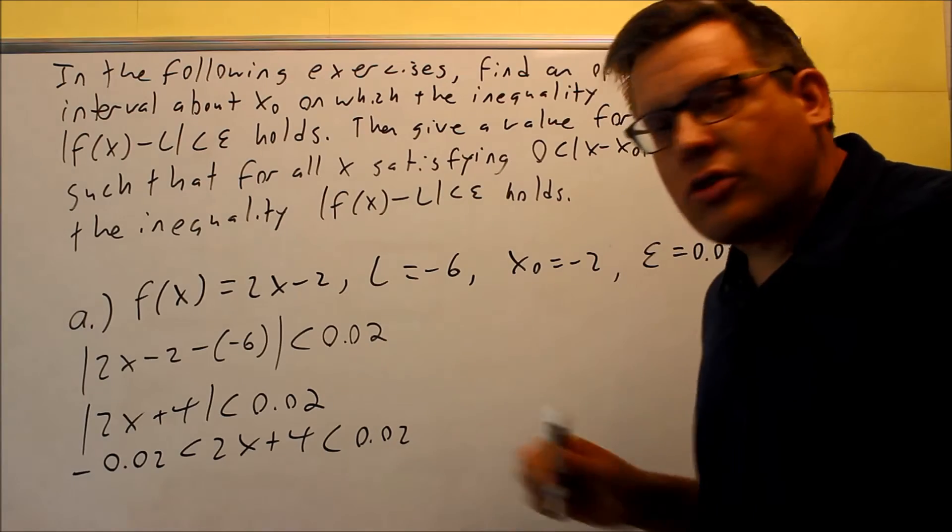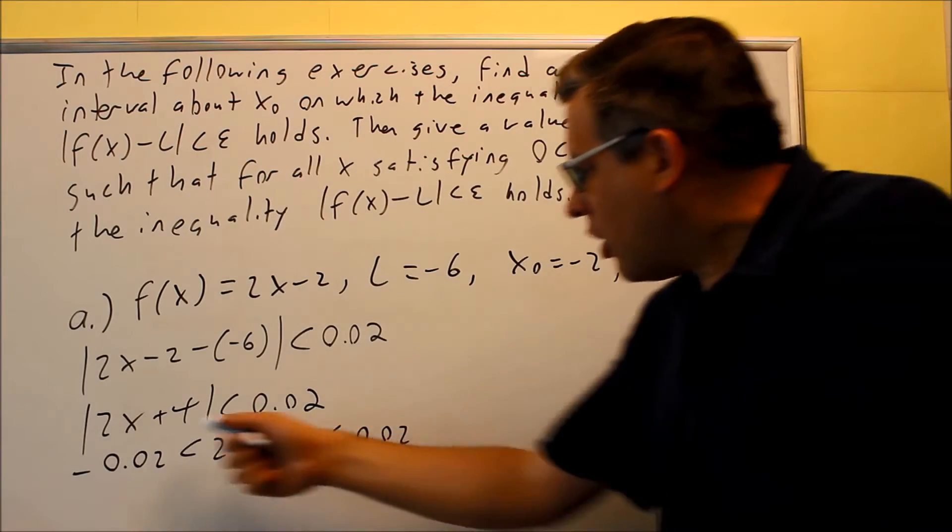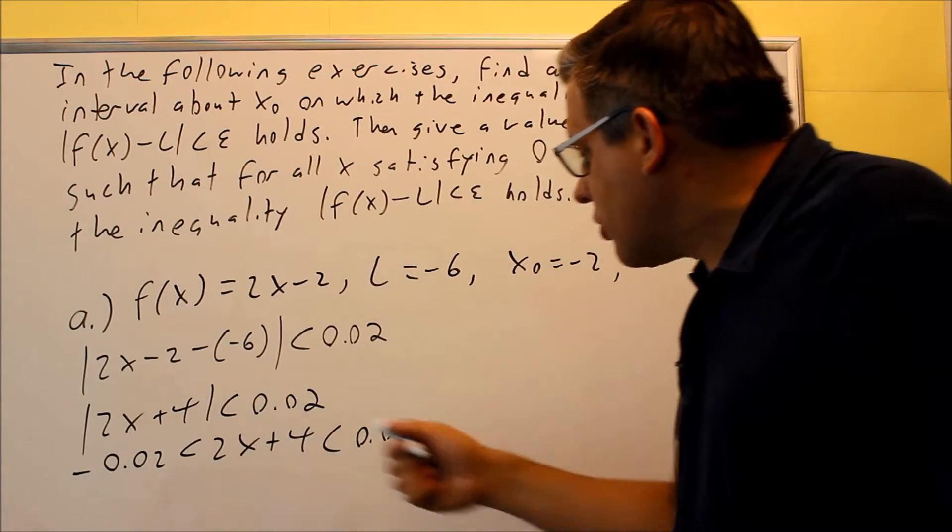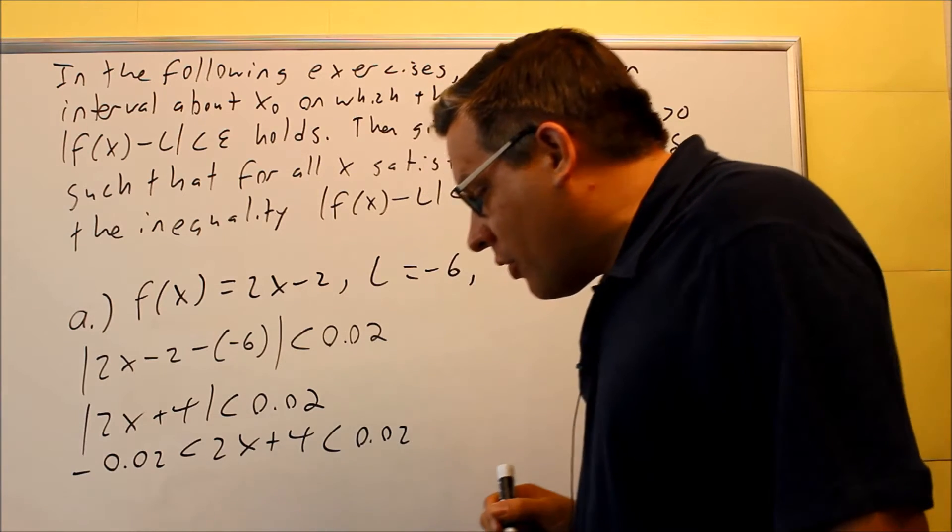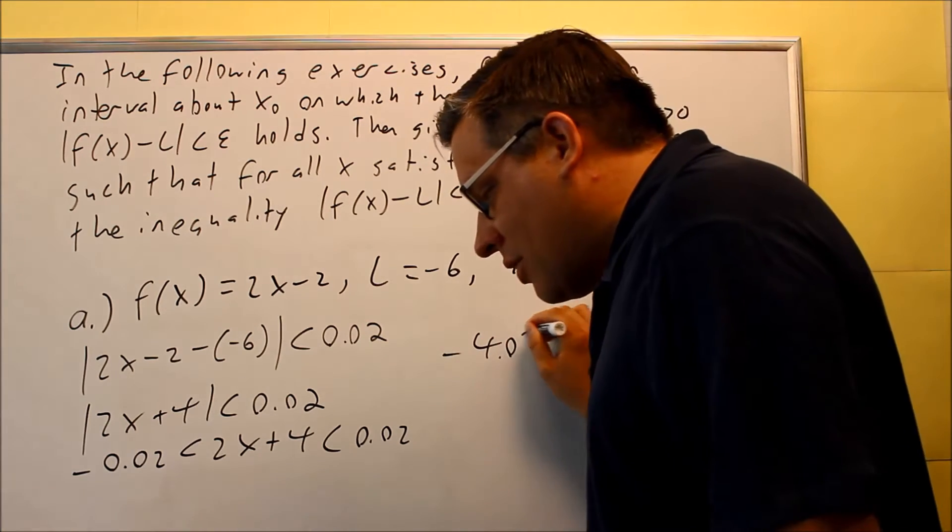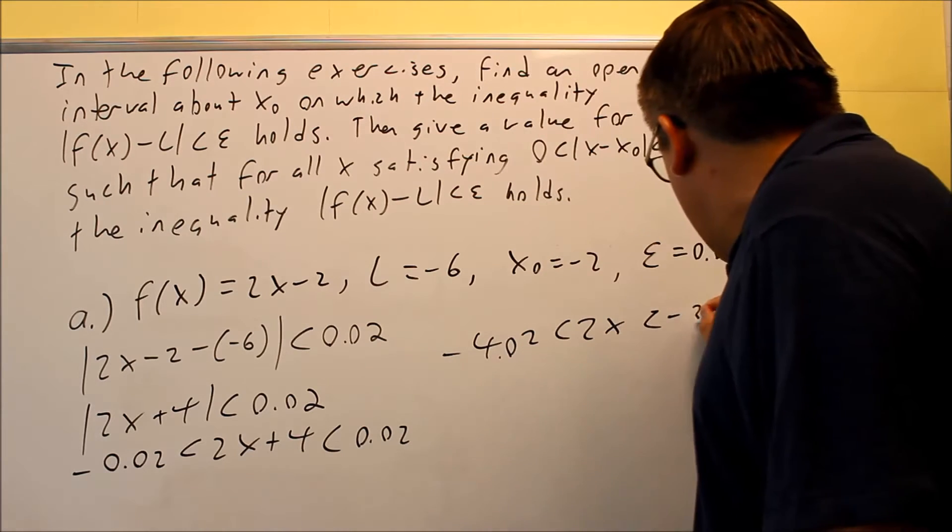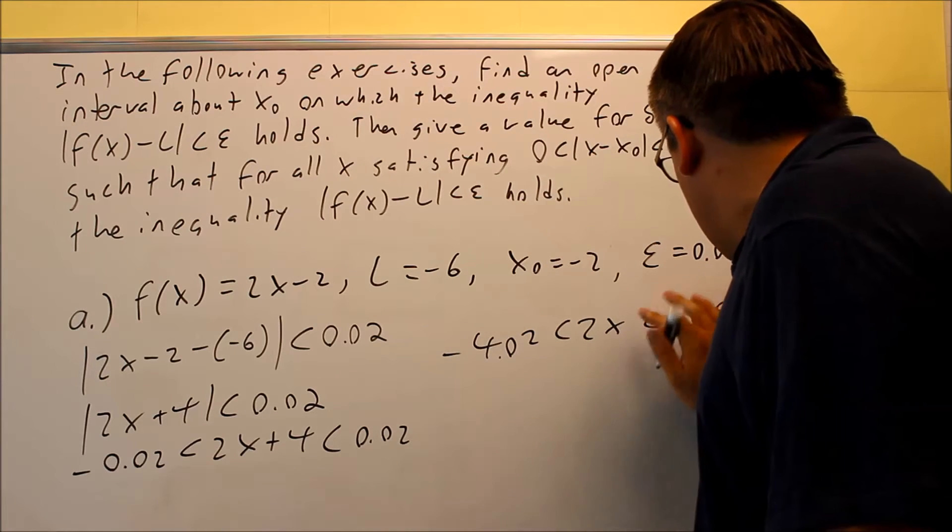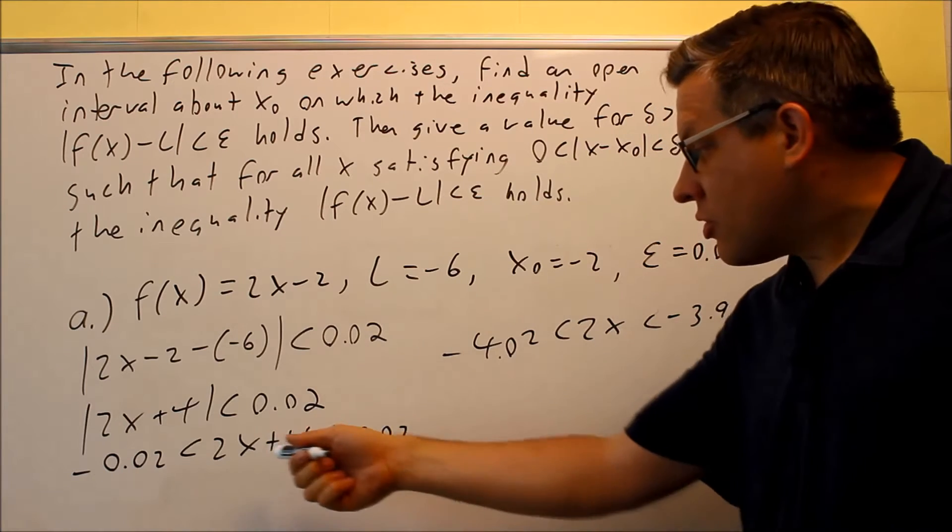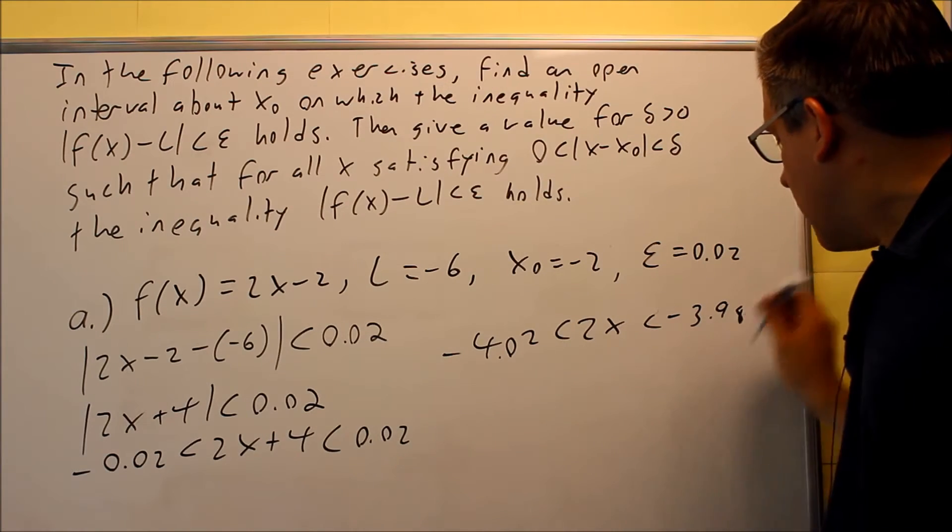And then from here, we need to subtract 4 from all the sides. So if we subtract 4 from everything, then we're going to get negative 4.02 less than 2x less than negative 3.98. Okay, so that's what we get when we subtract 4 from all the sides.